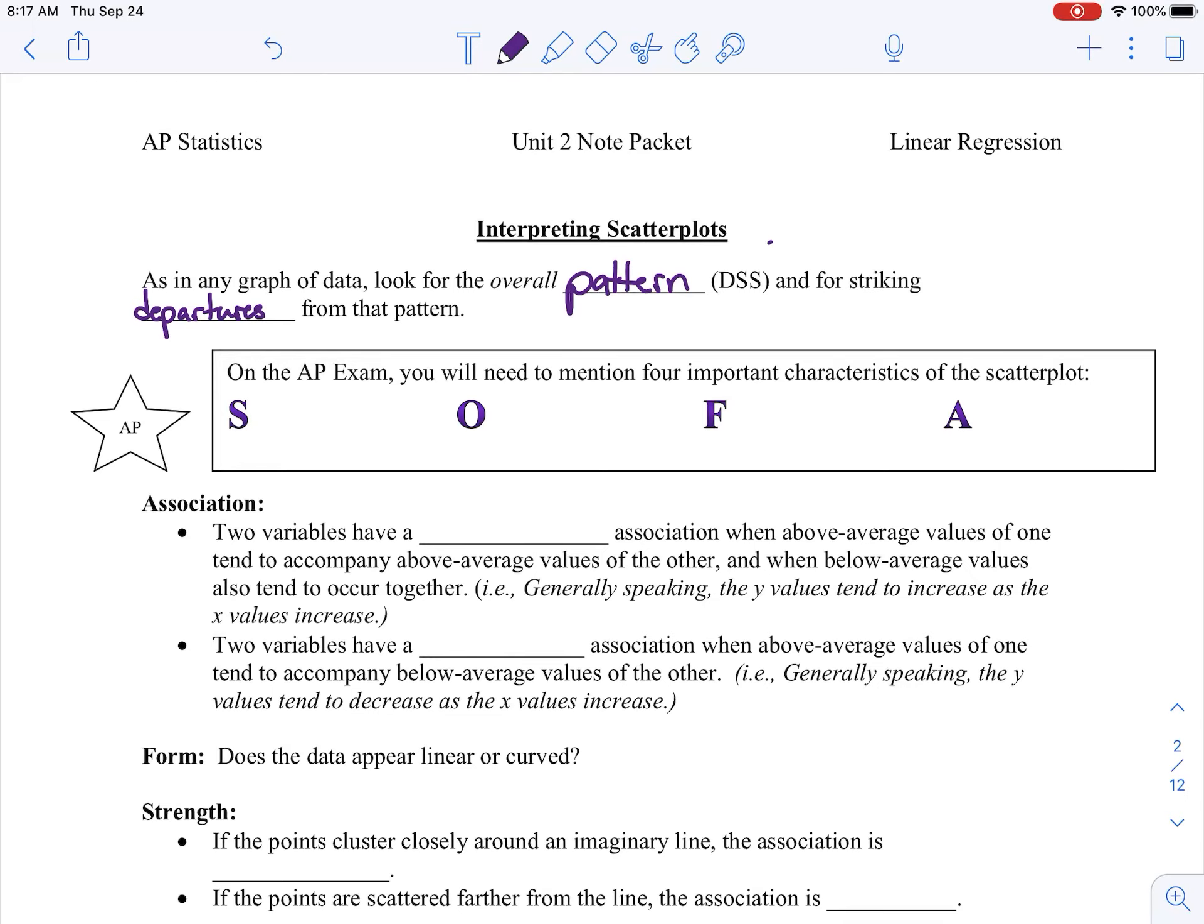Now notice that I have this DSS here. A couple years ago, I made the change to a different acronym, SOFA. We used to go off DSS, but there wasn't necessarily any nice, neat anything to remember. So we switched to SOFA. Anyway, that's direction, shape, and strength.